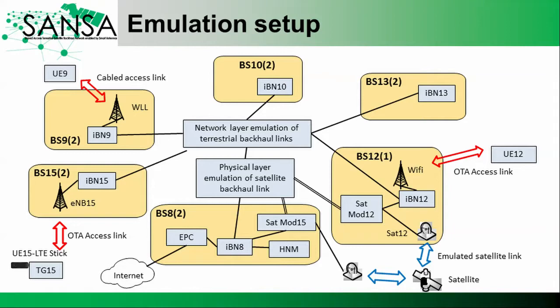All terrestrial backhauling was emulated at the network layer using a VLAN switch, and the satellite backhauling was emulated at the physical layer using satellite modems in back-to-back connection. Backhaul node number 8 was assumed to be directly connected to the internet by a cabled connection, and it also hosted the hybrid network manager and EPC.